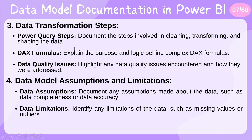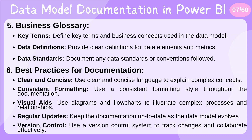Another mandatory section is data model assumptions and limitations. Document any assumptions made about the data, such as data completeness or accuracy. Also identify limitations, such as missing values or outliers, and explain whether these were treated as limitations or assumptions. These must be clearly added to the document.